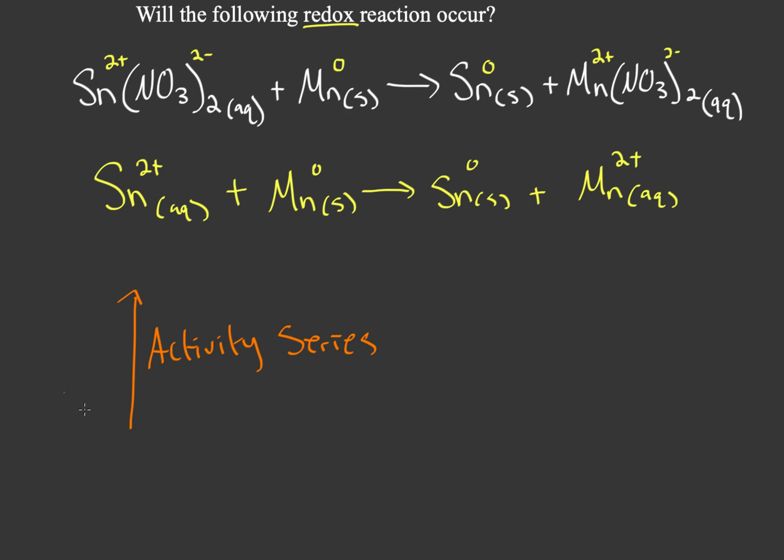If you look, tin is somewhere around here and manganese is higher up. That means manganese is more likely to get oxidized, and in this situation manganese went from zero to two plus, so it lost electrons because electrons are negatively charged. Therefore manganese did get oxidized, and since manganese is up the activity series, this reaction will happen.